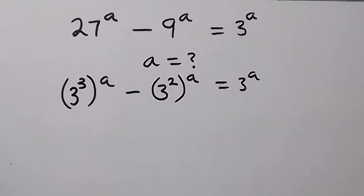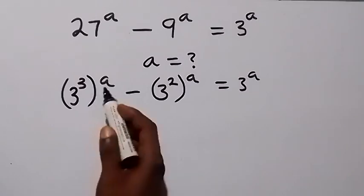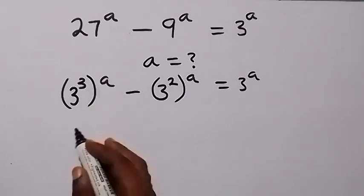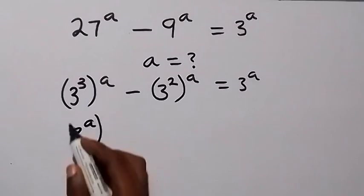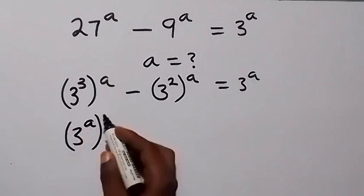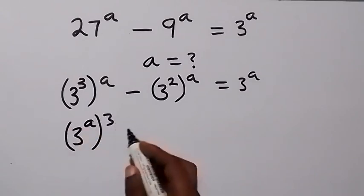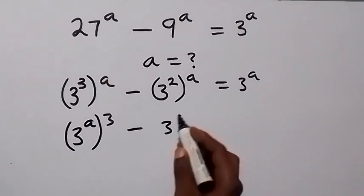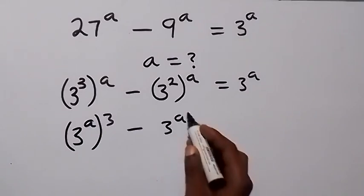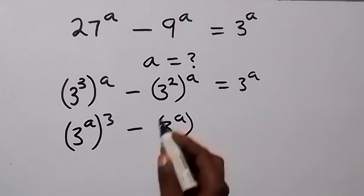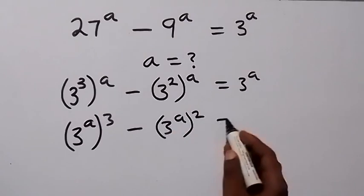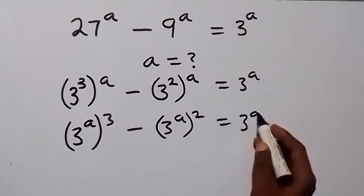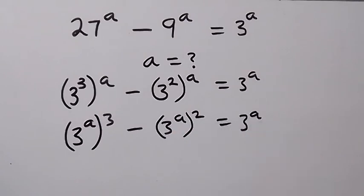Then from the law of indices, we can interchange the powers and this will be 3 raised to power a, then raised to power 3, minus 3 raised to power a, then raised to power 2, equals 3 raised to power a.